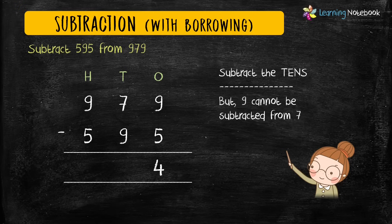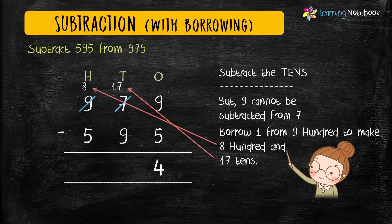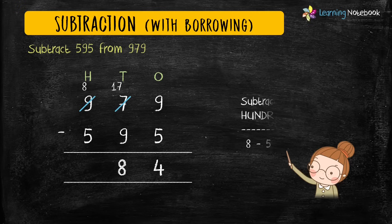9 is a bigger number than 7, so 9 cannot be subtracted from 7. We will borrow 1 from 9; therefore 9 becomes 8 and 7 becomes 17. Now we can subtract the digits at tens place: 17 minus 9 equals 8. Then subtract the digits at hundreds place: 8 minus 5 equals 3.